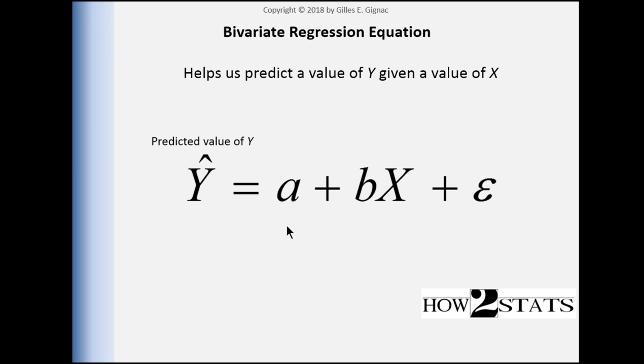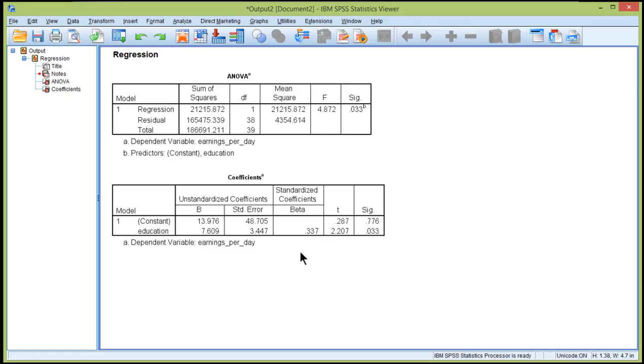Y-hat equals the intercept plus the slope multiplied by a value of X plus error. I'm going to walk you through each portion. The intercept is what I call the foundation of the regression equation, because you're starting off with predicting how much somebody earns if they had no education whatsoever.